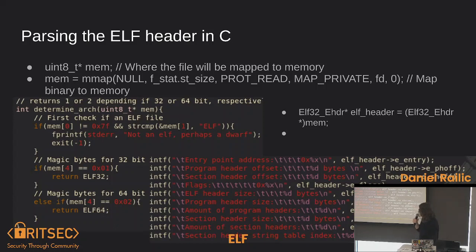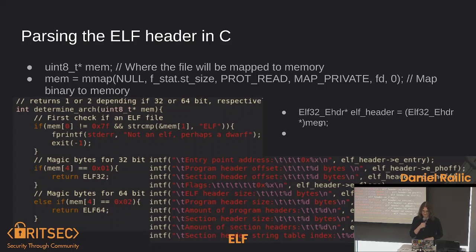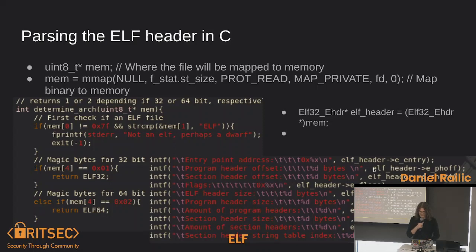Once you know if it's 32-bit or 64-bit, you can parse the rest. You create an eheader struct — using Elf32 if it's 32-bit — and just cast that memory pointer to an ELF header. Once you have your ELF header, you can grab all the different fields of it by just doing elf_header->e_entry and the rest of the fields. That's what it looks like in C — all those values, you can pretty much find them that way.